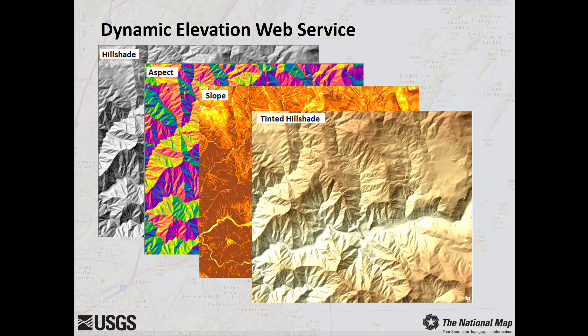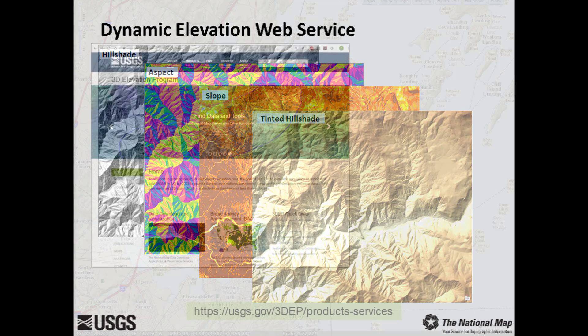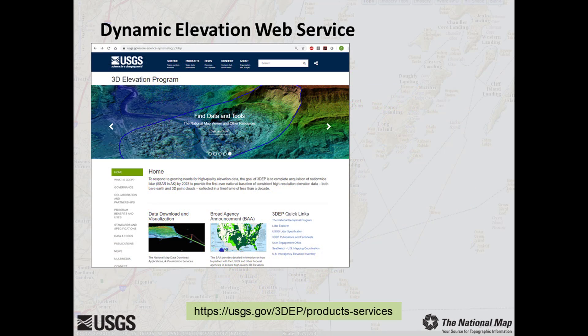Open Geospatial Consortium Web Map Service and Web Coverage Service interfaces are enabled to support interoperability across systems. The Web Coverage Service allows access to the underlying data for analysis and visualization in GIS software. The Dynamic Platform supports the exploration of 3DEP Digital Elevation Models, or DEMs, for the US and territories at a mixture of scales, including 1-meter DEMs.